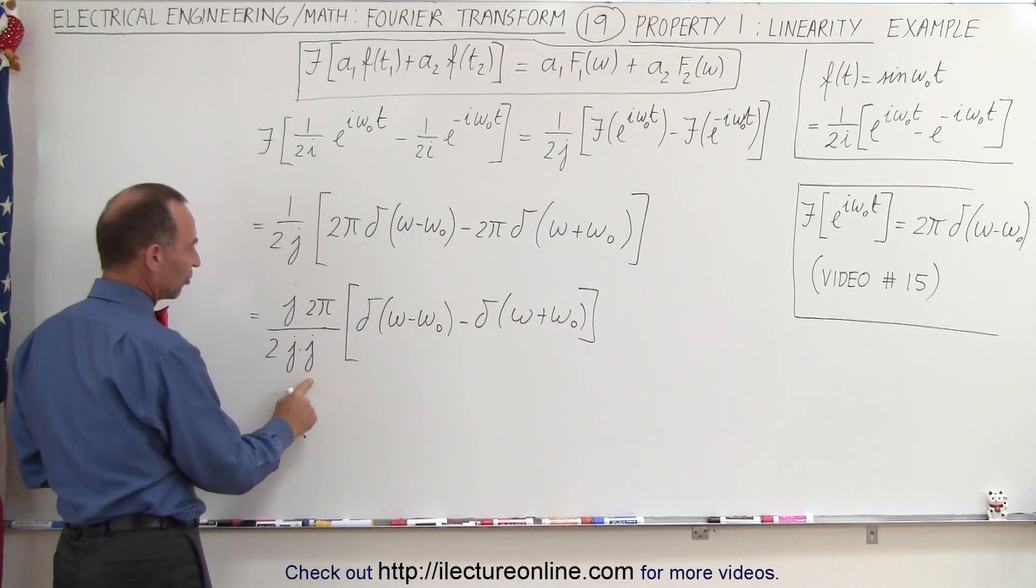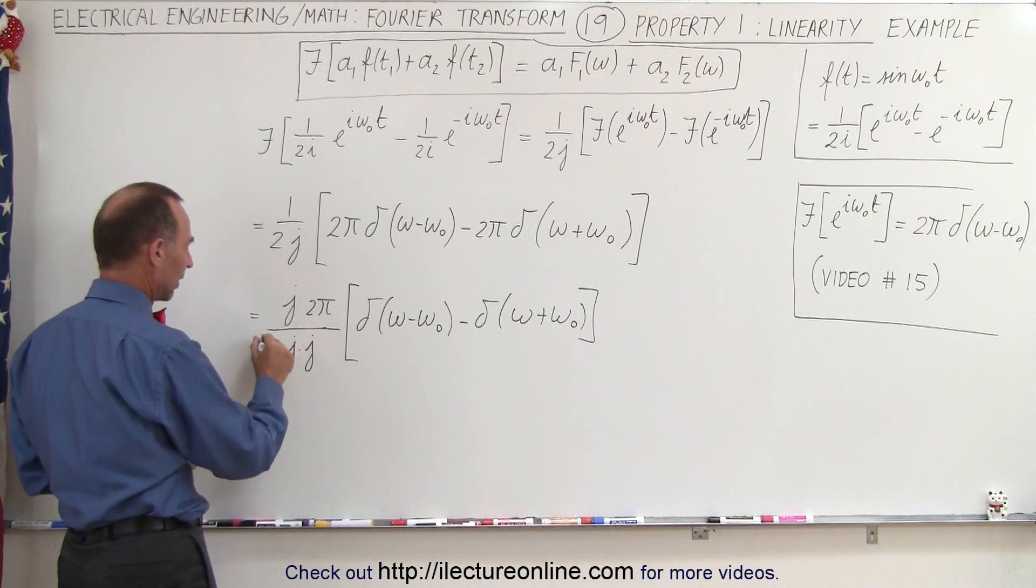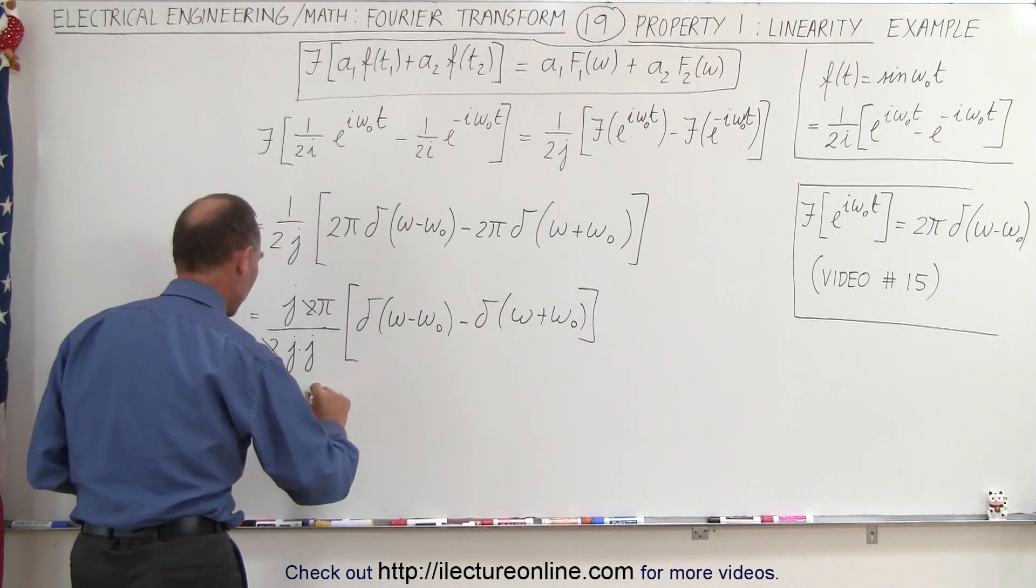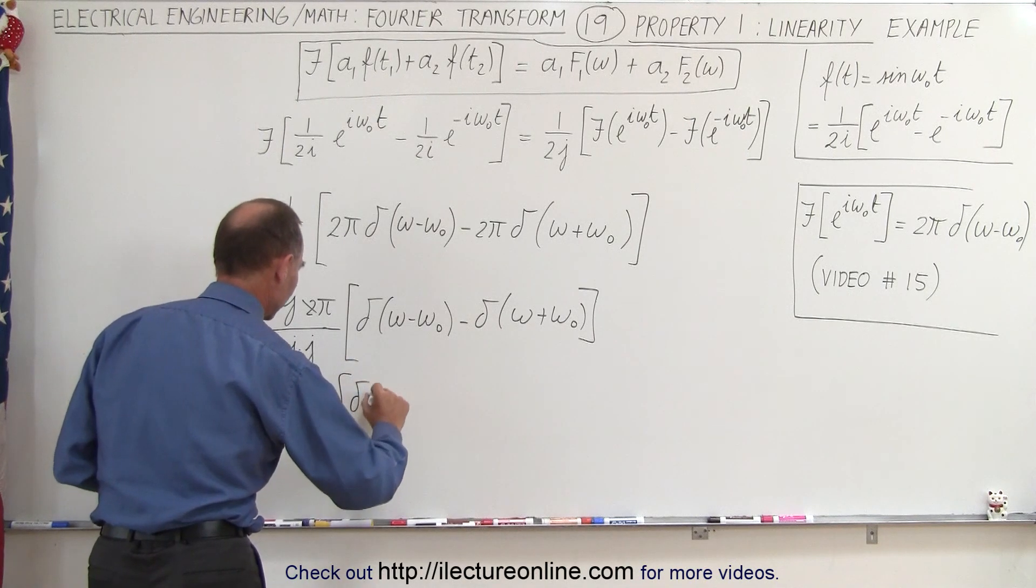Of course, j times j equals negative 1. We can bring that up here, and the 2's cancel. So that gives us equal to minus j pi times the delta function.